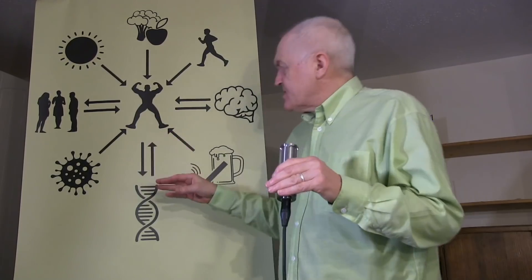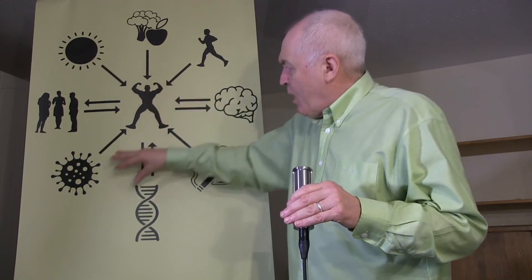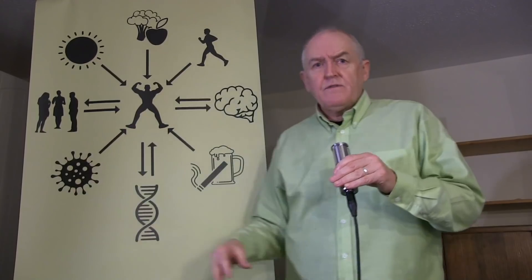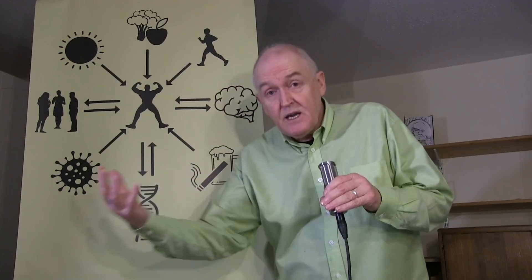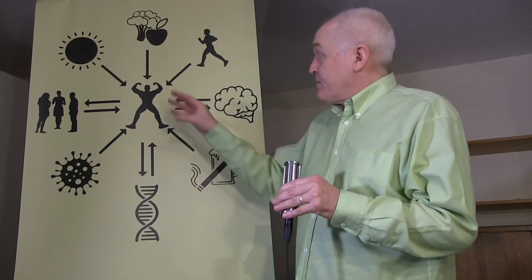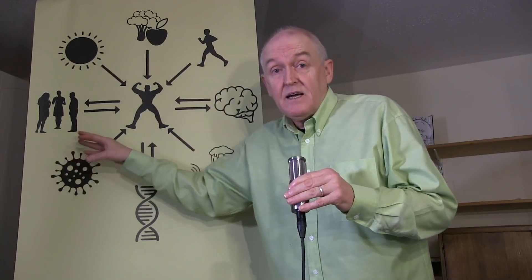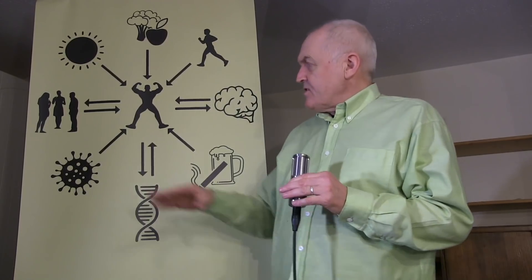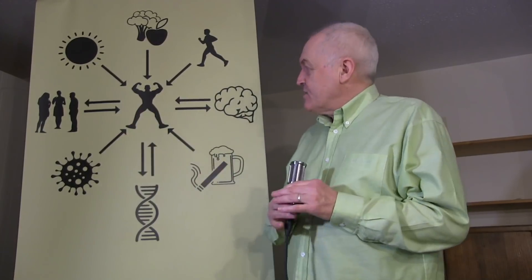There's various infections that we can get, but there again this could have been a two-way arrow really, because the way that we live can optimize our immune system. For example, we know that people with good amounts of vitamin D are likely to have a better immune system. People with a good diet are likely to have a better immune system.